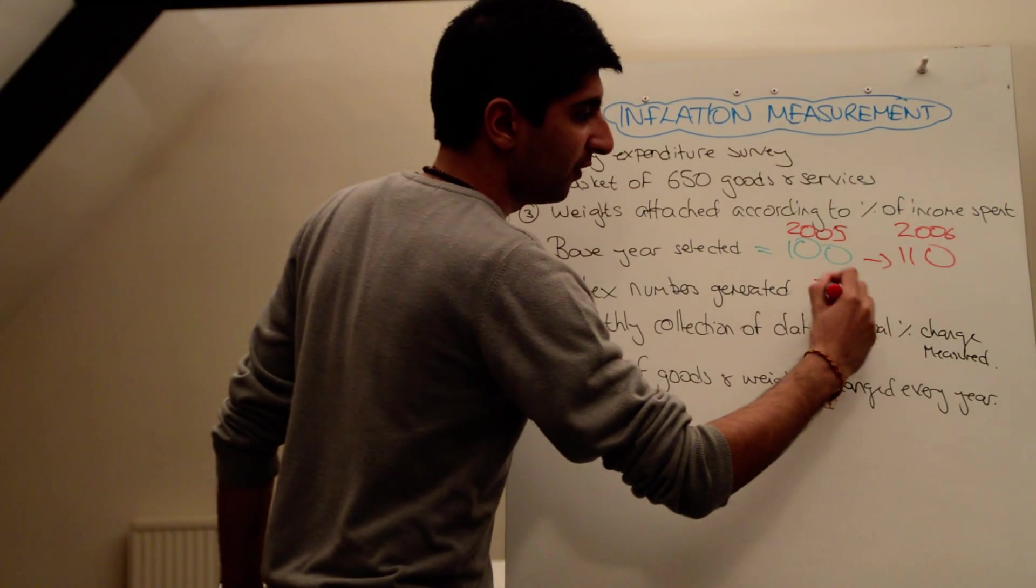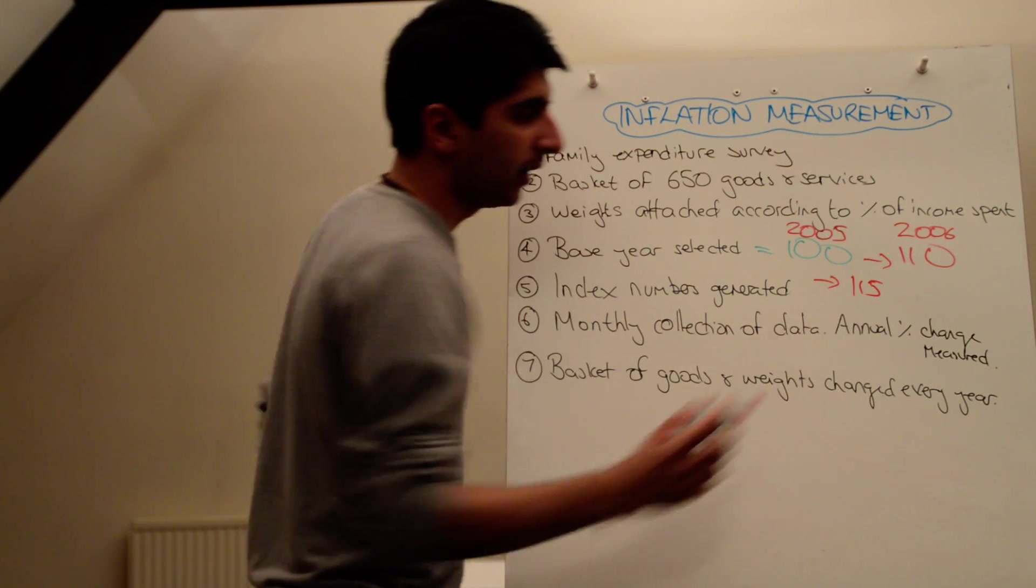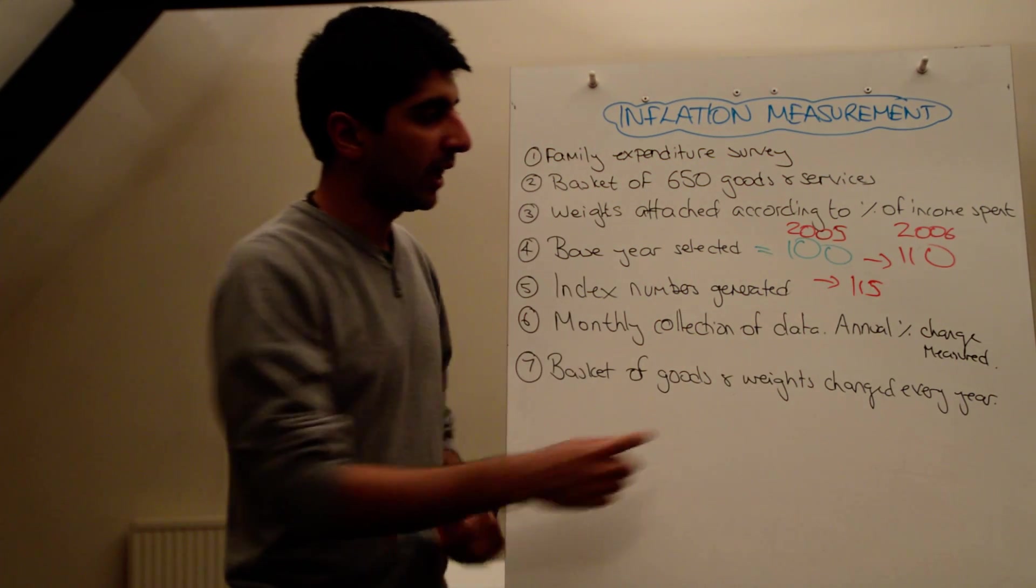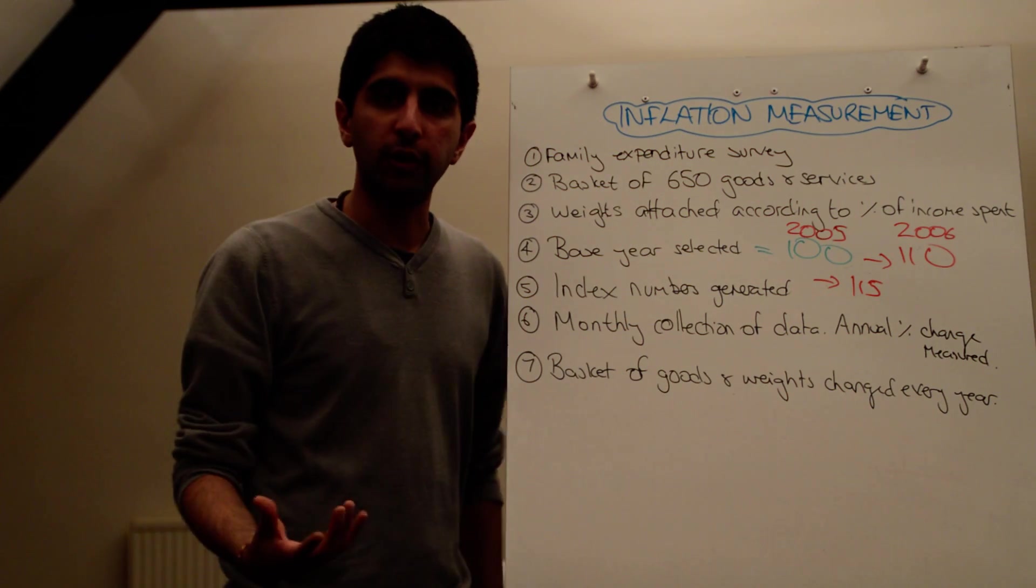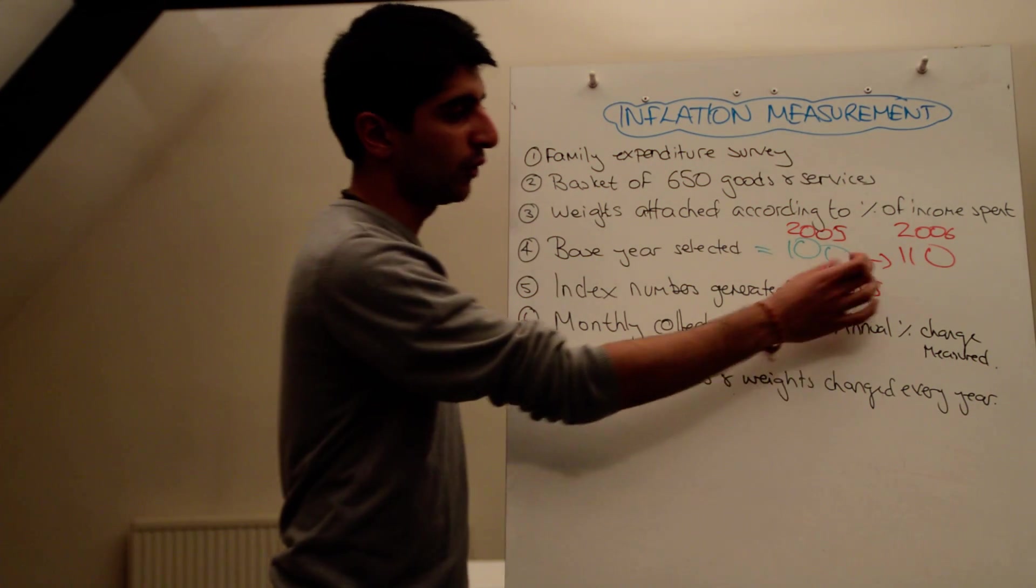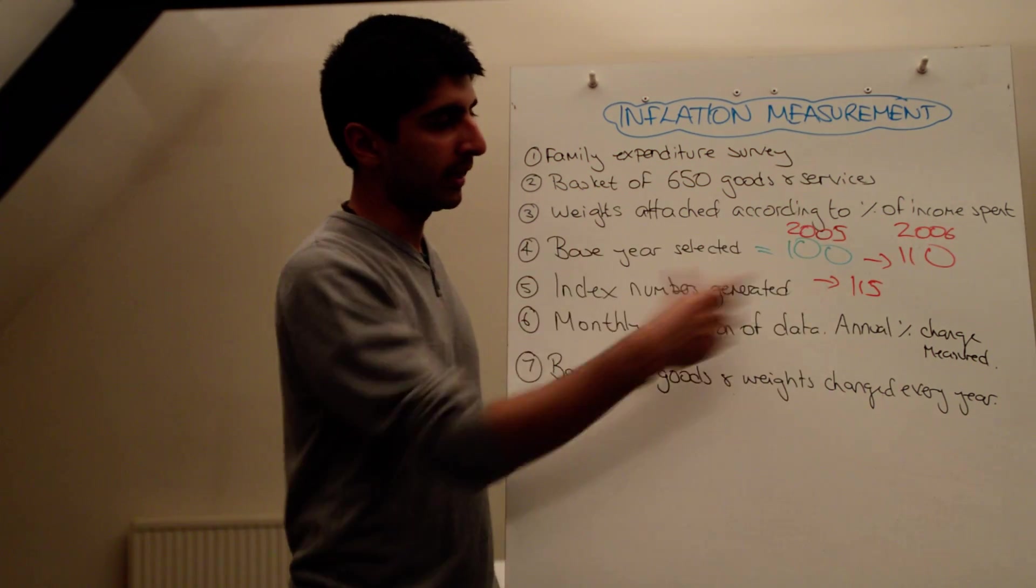So if the next year, inflation went to 115, to work out the percentage change, it's 5 over 110 times by 100, and that will give you the inflation rate for 2007. So that's what I mean by index numbers are used.